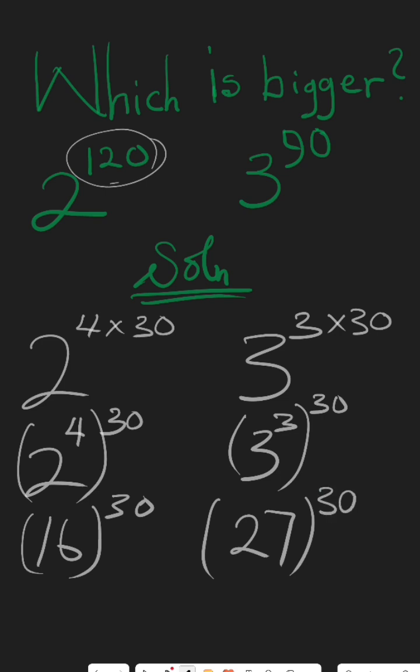Now the powers are equal, so we cancel that. Then we check the base. The base 16 is less than 27, so we say 2 raised to the power of 120 is less than 3 raised to the power of 90.